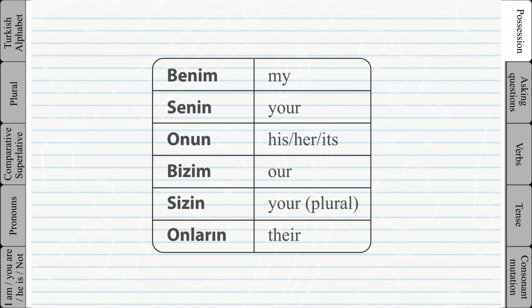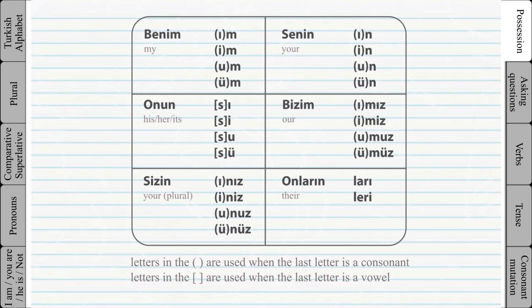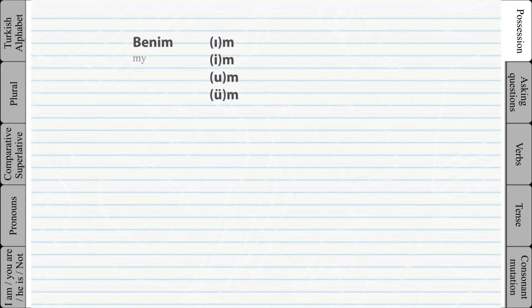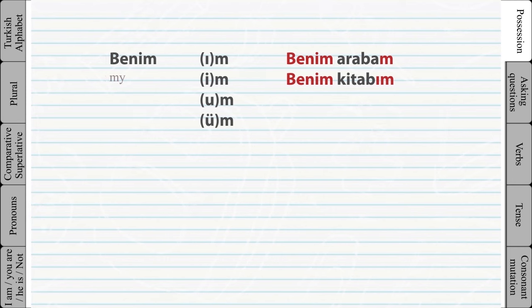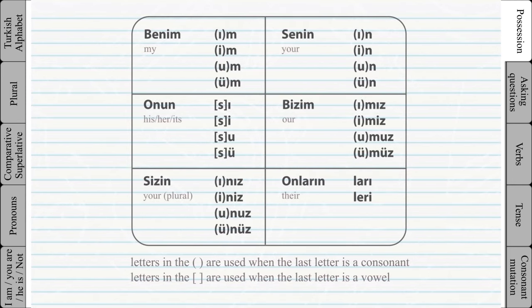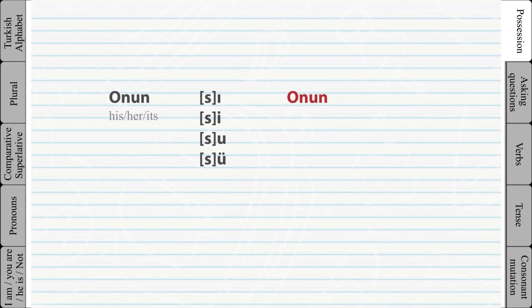Pronouns of possession. The pronouns of possession are also similar to subject pronouns — when we use them we should also add the correct endings. Look at the table to see the pronouns of possession and the possible endings. The letters in parentheses are used when the last letter is a consonant, and the letters in square brackets are used when the last letter is a vowel. For example, 'my car' — because 'araba' ends with a vowel, we only use the letter 'm'. For 'my book', because the word ends with a consonant, we use the word in parentheses.